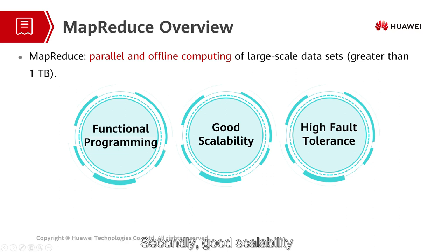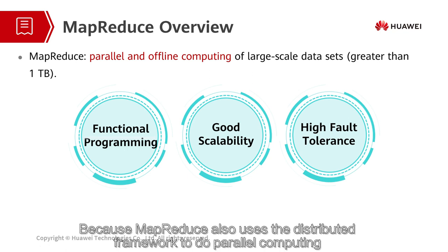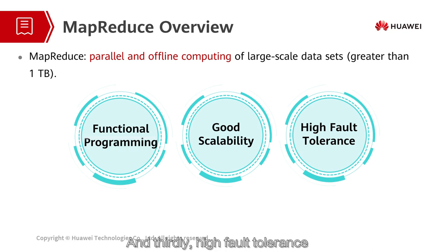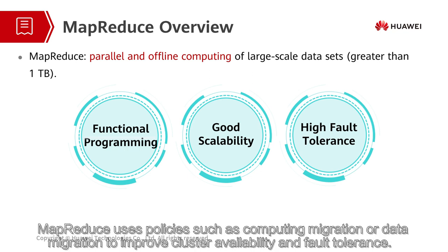Secondly, good scalability. Because MapReduce also uses the distributed framework to do parallel computing, you can always add nodes to expand the cluster capability. And thirdly, high fault tolerance. MapReduce uses policies such as computing migration or data migration to improve cluster availability and fault tolerance.